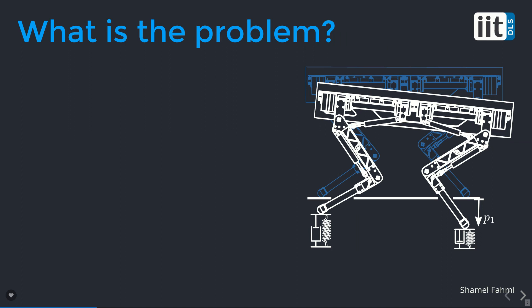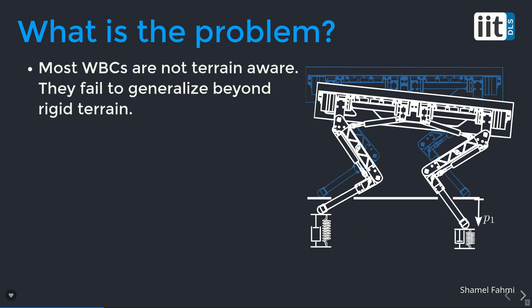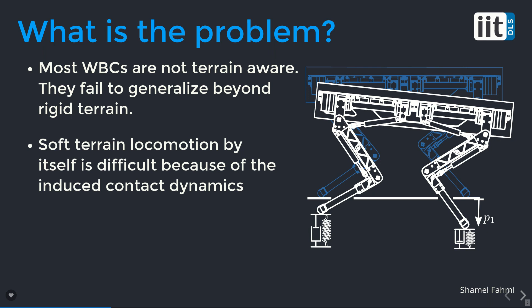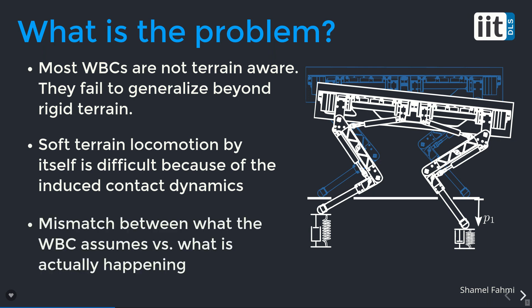Why is soft terrain a problem for legged locomotion specifically? The first problem is that most locomotion control strategies — take whole body control frameworks for example — are not terrain aware. This means they fail to generalize beyond rigid terrain due to assumptions on rigid contact. In most cases, the whole body control formulation dictates that the feet are on rigid terrain and thus required to remain stationary, which is obviously not true on soft terrain. The second problem is that soft terrain induces contact dynamics that may cause oscillations or instabilities that whole body controllers are not accounting for. With these two problems together, there is a huge mismatch between what the whole body controller assumes versus what the robot actually feels.